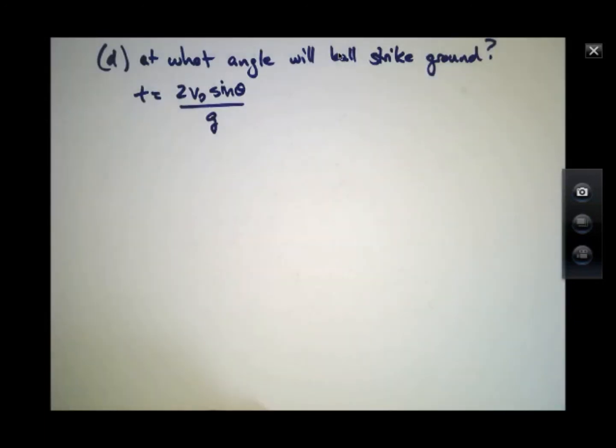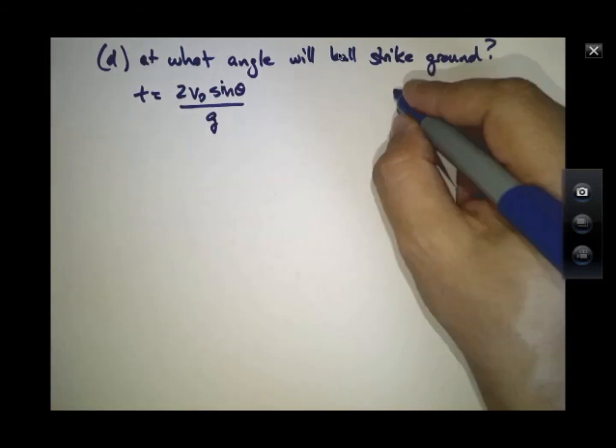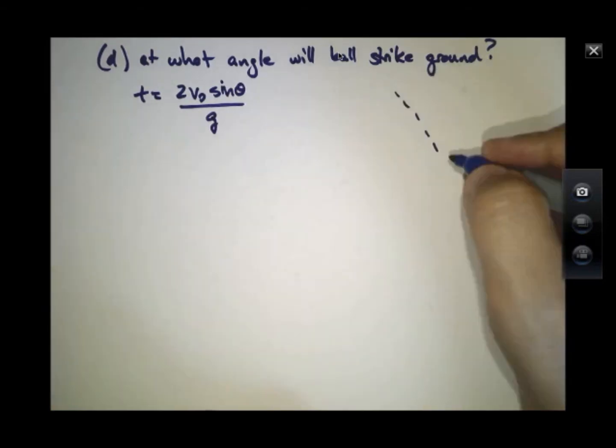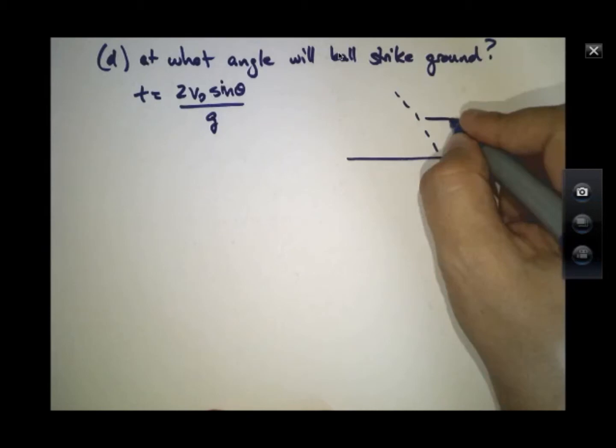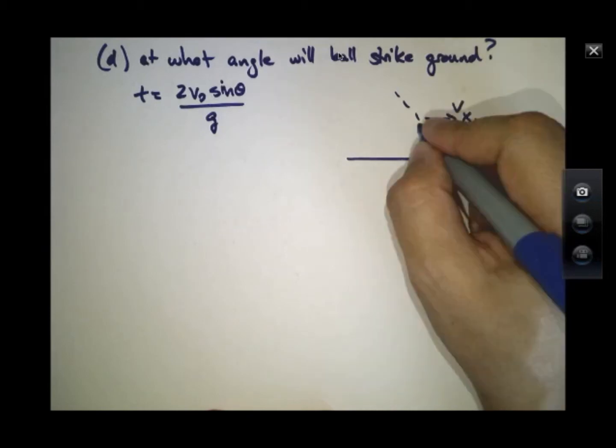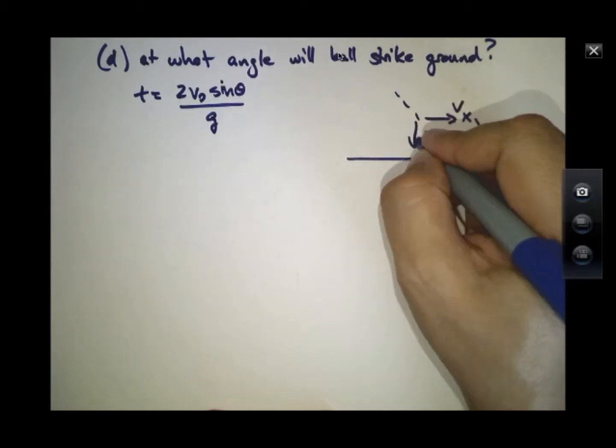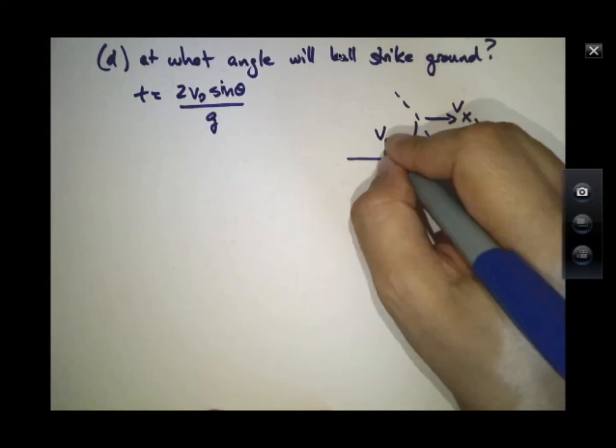So we're going to use that in our expressions. Now, the ball is coming down and it's going to strike the ground here. It has some x-component velocity and it has some y-component velocity.